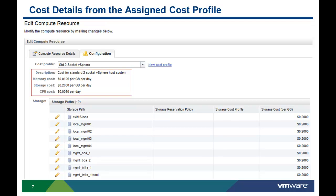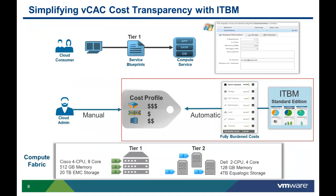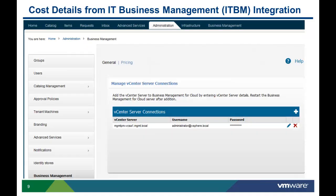Now let's see how this is all done in ITBM. In this scenario, ITBM has discovered vSphere resources through its connection with one or more vCenter servers. It has automatically calculated the cost of those resources using the heuristic data provided by the ITBM reference database. The same vSphere resources discovered by ITBM are also being managed by VCAC. When ITBM and VCAC are managing the same vSphere resources from the same vCenter servers, VCAC automatically imports the cost profile information from ITBM.